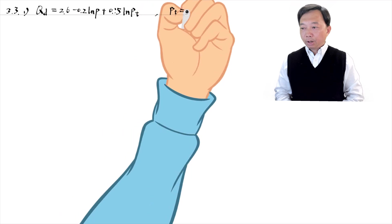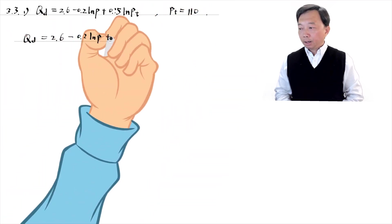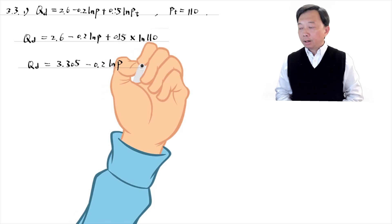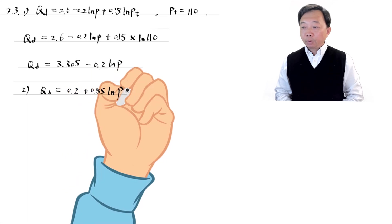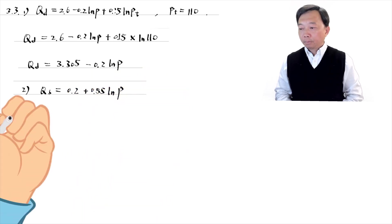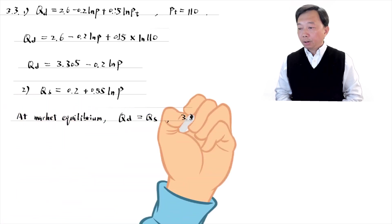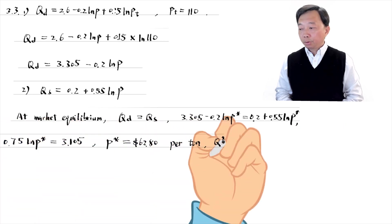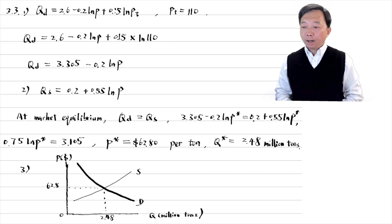In the first step, we obtain the demand function. We plug in the price of tomato paste and get the demand function, which describes the quantity demanded as a function of only the price of processing tomatoes, holding other factors constant. In the second step, we find the market equilibrium price and quantity. At the market equilibrium, the quantity demanded equals the quantity supplied. We can find the equilibrium price equal to $62.80 per ton. Substituting it into either the demand or the supply equation, we have the equilibrium quantity of 2.48 million tons per year.